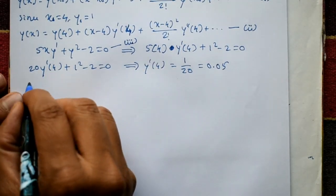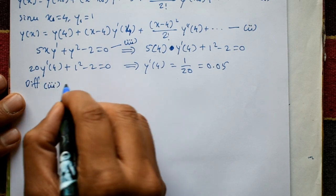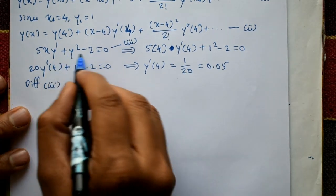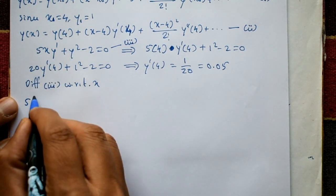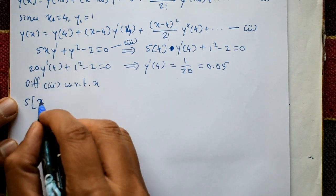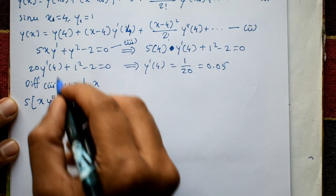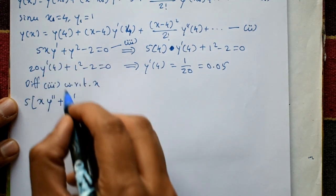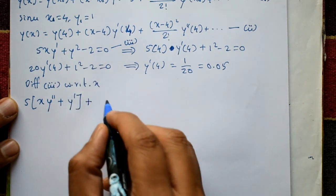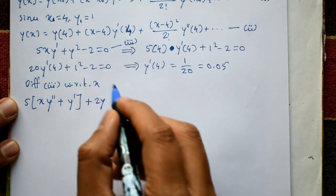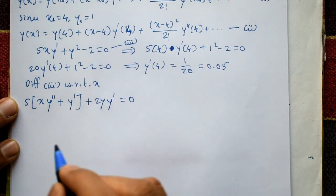Differentiate equation 3 with respect to x using the product rule: 5[x·y'' + y'·1] + 2y·y' = 0, which gives 5x·y'' + 5y' + 2y·y' = 0.